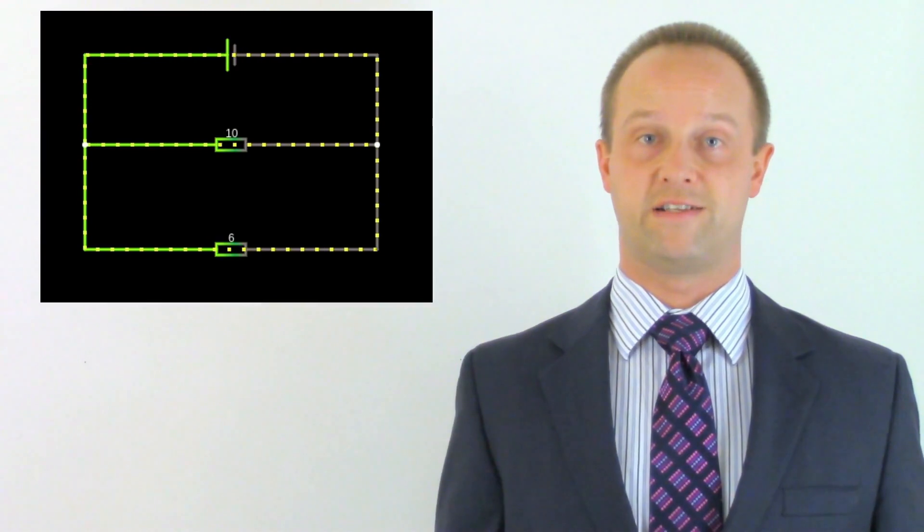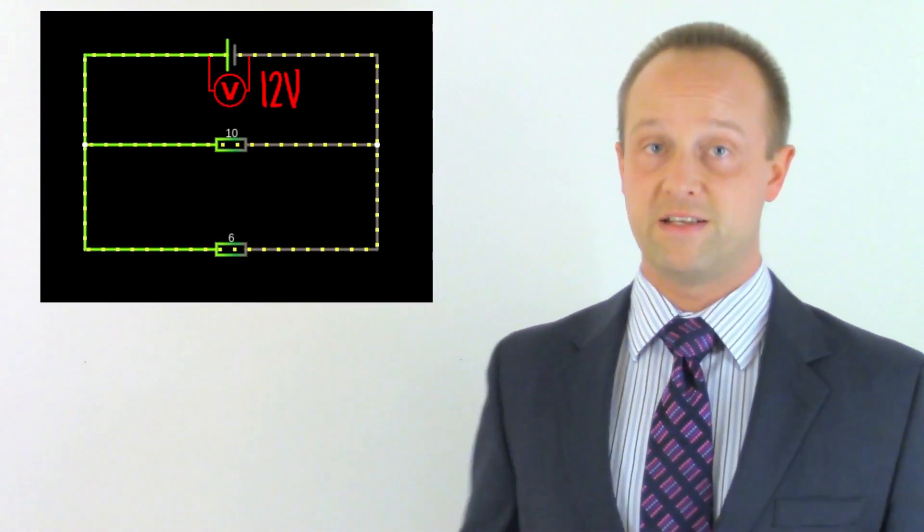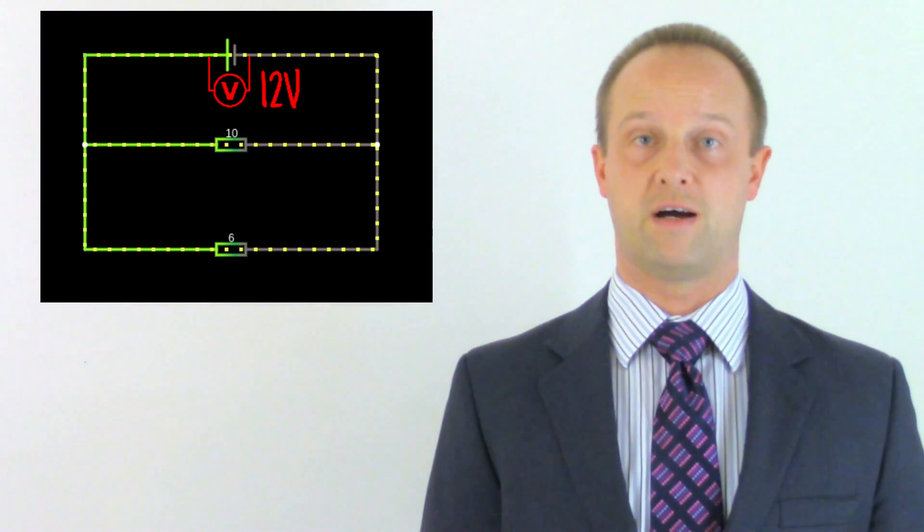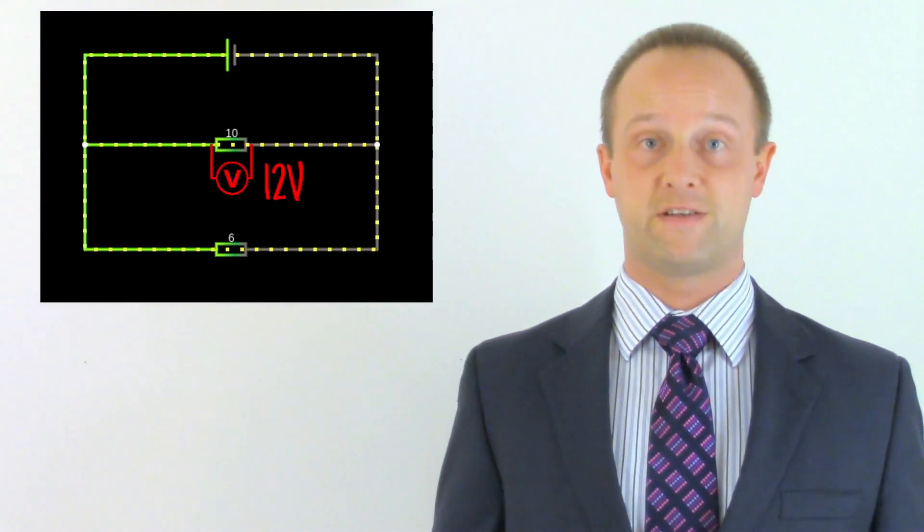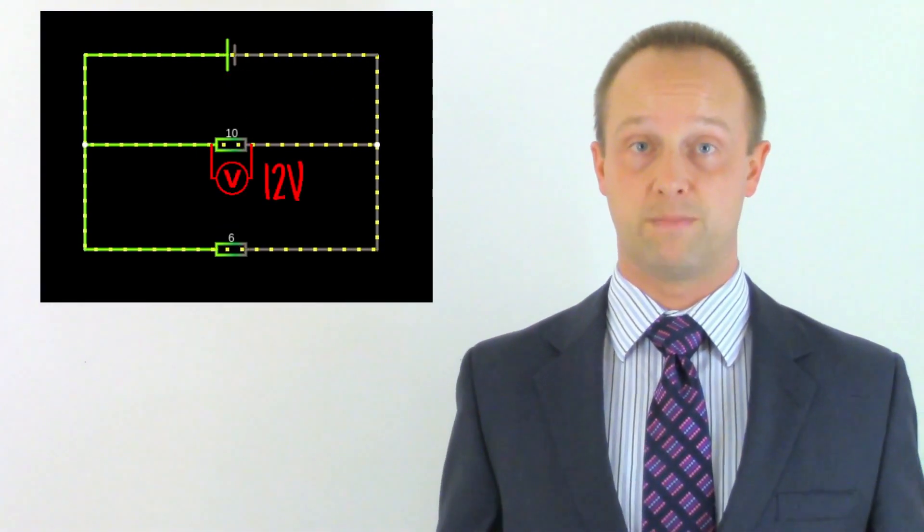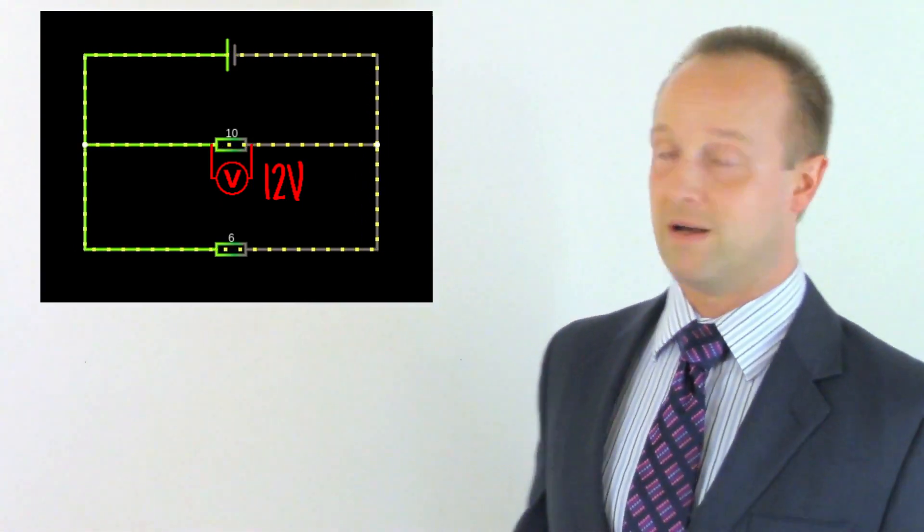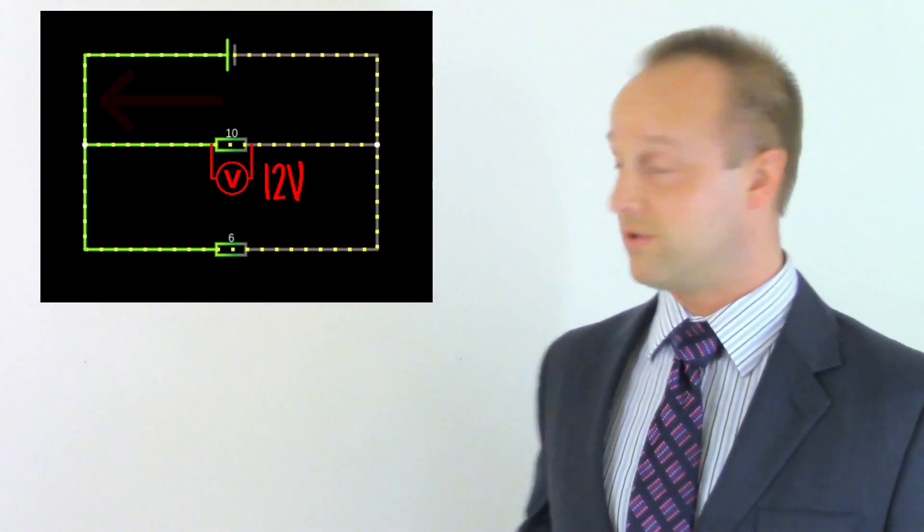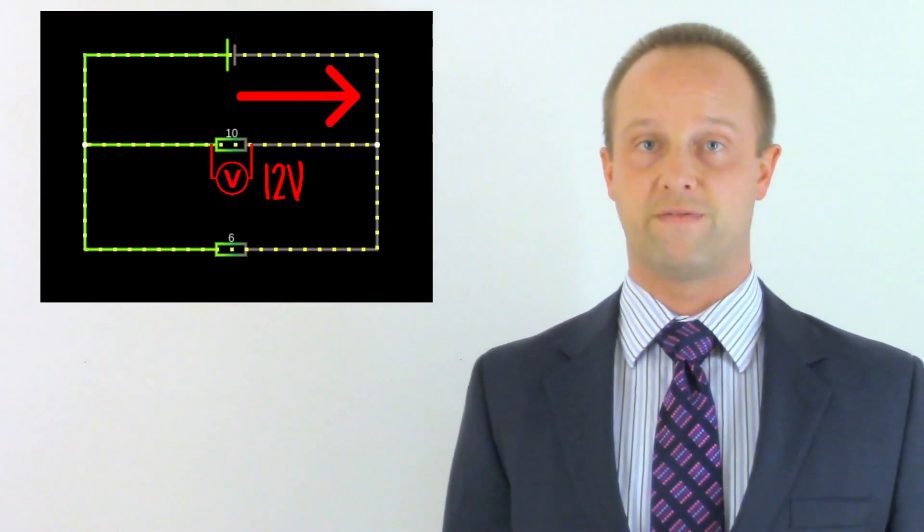If all of the potential energy, all 12 volts of it, is used just in these sections where the components are, then the potential difference across these sections must also be 12 volts. Remember, all of these wires are all at 12 volts, and all of these ones are at 0 volts.